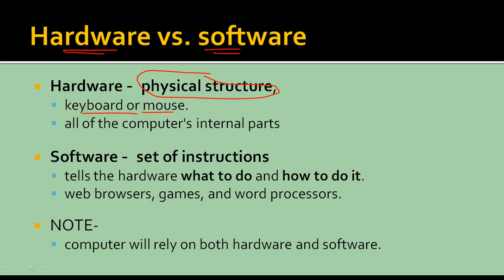For example, keyboard, mouse, or all the computer's internal parts — like the structure of a keyboard or the structure of memory — that is called hardware. Software is nothing but a set of instructions which tells the hardware what to do and how to do it. For example, web browsers: you can search something in Google and Google finds the particular image or video which becomes an output.